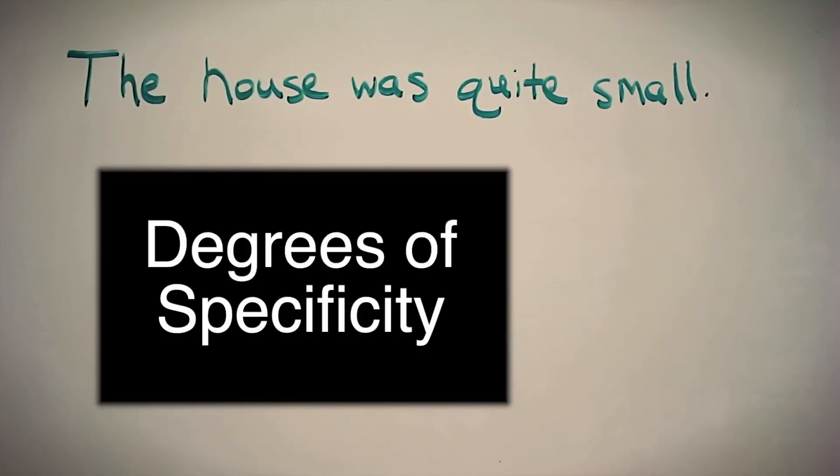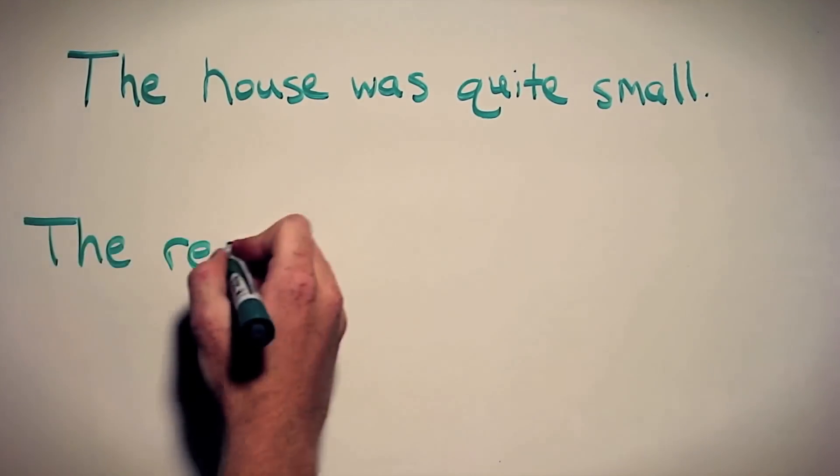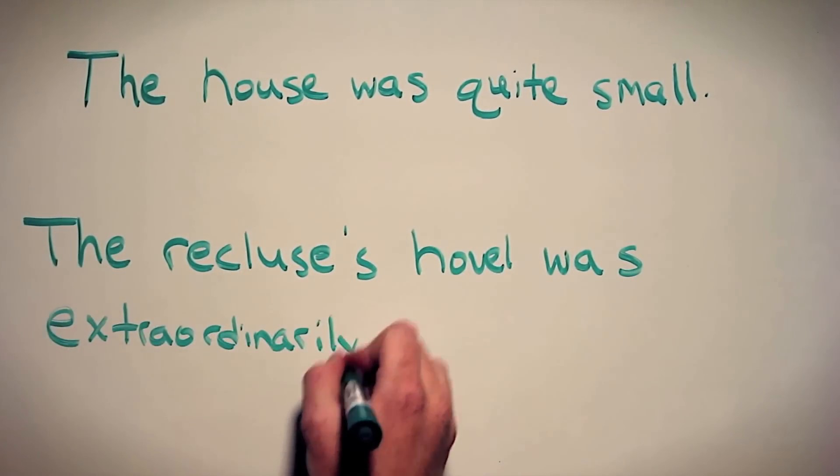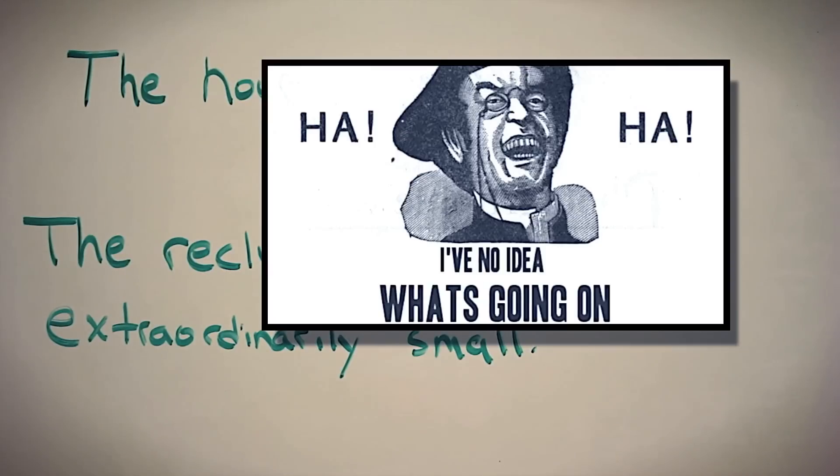So to fix this, we use what is called degrees of specificity to keep our audience interested. All this means is that we replace words like house with a more specific word, and in turn a more interesting word. Instead of that first sentence, we would write something like this: The recluse's hovel was extraordinarily small. With this sentence we give some detail as to what is actually going on.